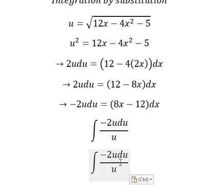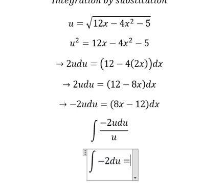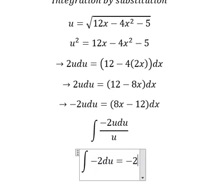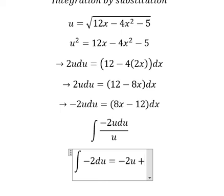So u divided by u. We have negative 2. The integration of this one, we have negative 2u. And I will put c.